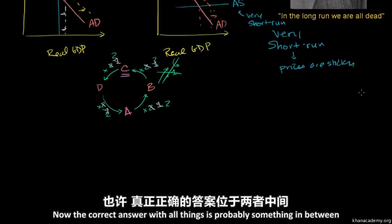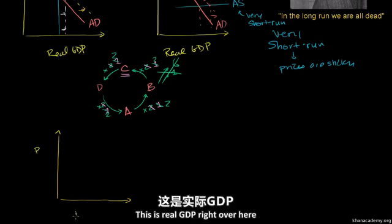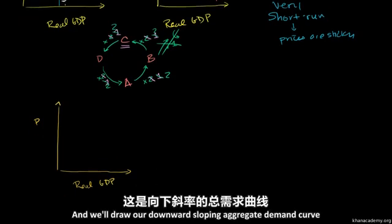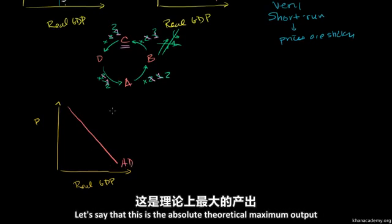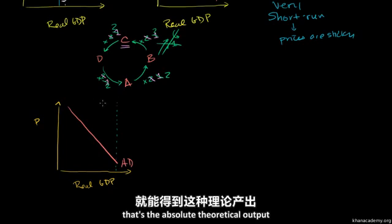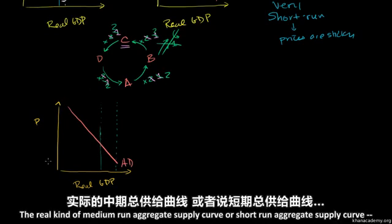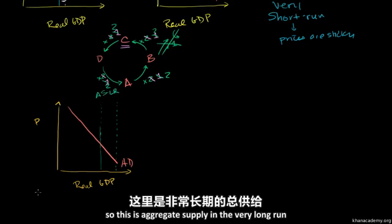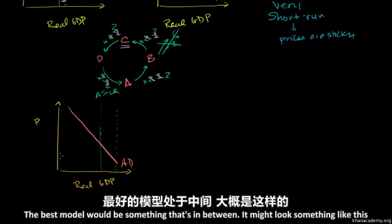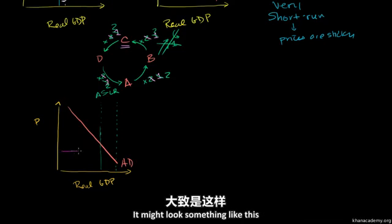Now the correct answer is probably something in between. A more accurate model might look something like this — price on one axis, real GDP on the other, with a downward sloping aggregate demand curve. Let's say this is the absolute theoretical maximum output, where everyone in the country isn't sleeping and factories are being run to the ground. And let's say this is its potential — a healthy state where the economy might be operating. This is the long-run aggregate supply curve. The best model would be something in between — let me draw it in magenta.